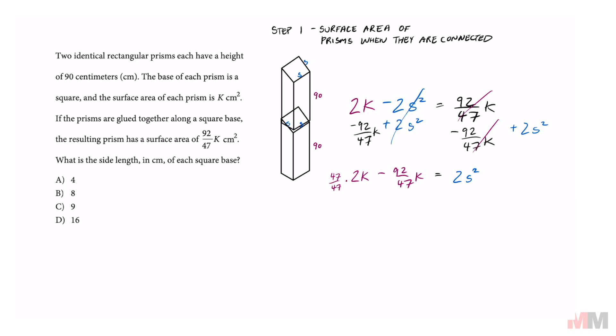Which will then give you 94K over 47 minus 92K over 47. And that simplifies to 2K over 47 equals 2S squared.